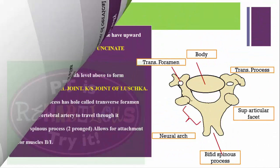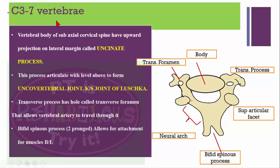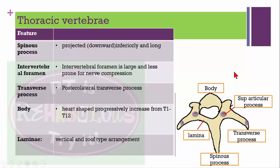C3 to C7 vertebra: the vertebral body of the sub-axial cervical spine has an upward projection on the lateral margin called the uncinate process, which articulates with the level above at the uncovertebral joint, known as the joint of Luschka. The transverse process has a hole called the transverse foramen that allows the vertebral artery to travel through it. C3 to C7 have a bifid spinous process — two prongs — that allows bilateral muscle attachment.